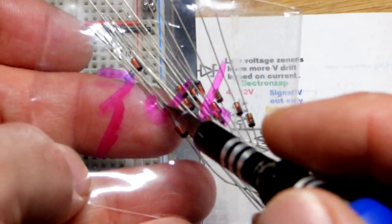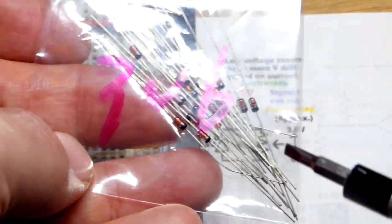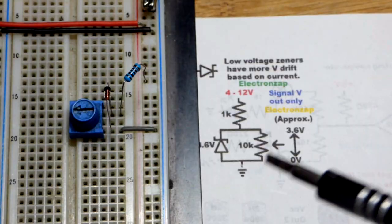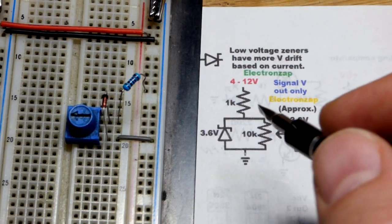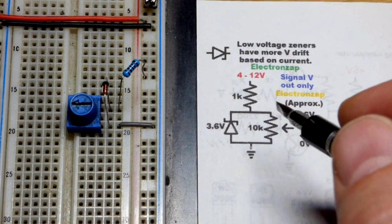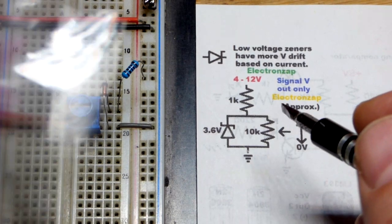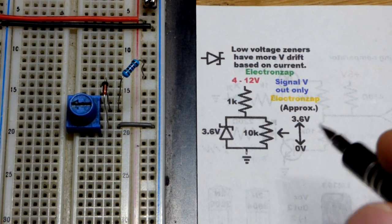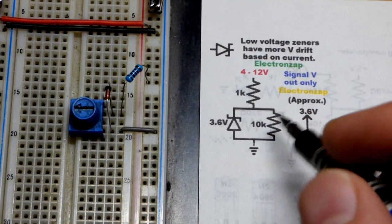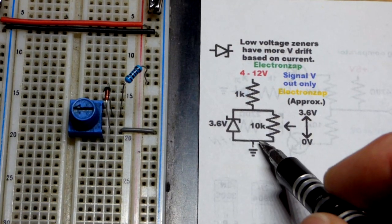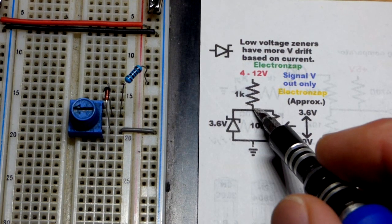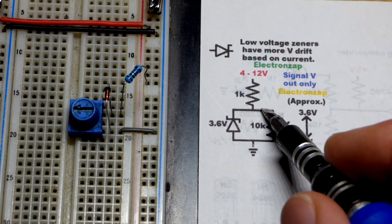That's 3.6 volt Zener diode. They take the V for voltage and put it where the decimal point is because you probably won't see a little dot there, especially when they handwrite it in pink. I recommend getting a semiconductor kit that includes Zener diodes, but I bought these pretty cheap a long time ago through eBay, most likely.